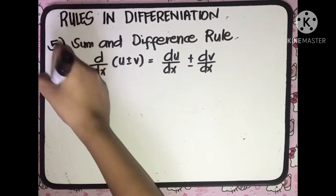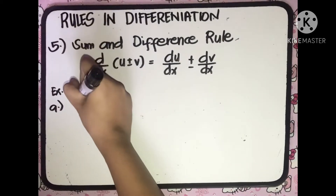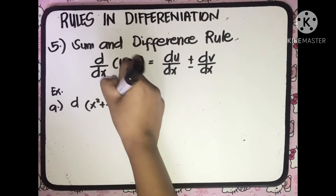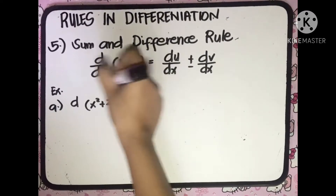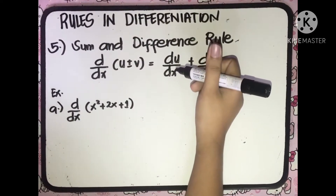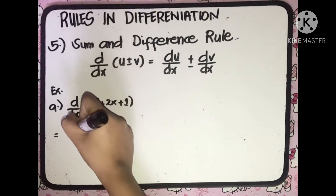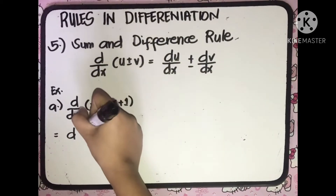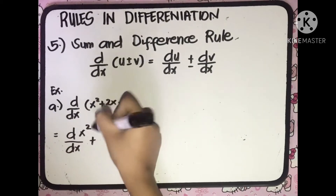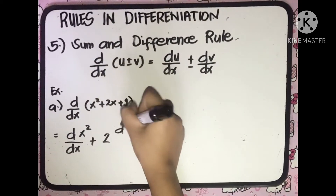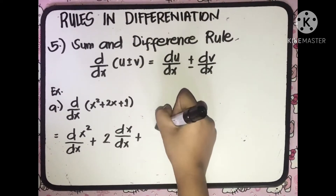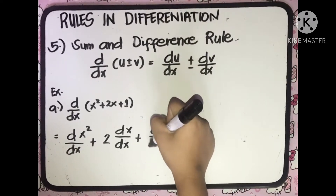For example, we have the derivative of x squared plus 2x plus 1 with respect to x. By the Sum and Difference Rule, we distribute the derivative to each term: the derivative of x squared with respect to x, plus 2 multiplied by the derivative of x with respect to x, plus the derivative of 1 with respect to x.